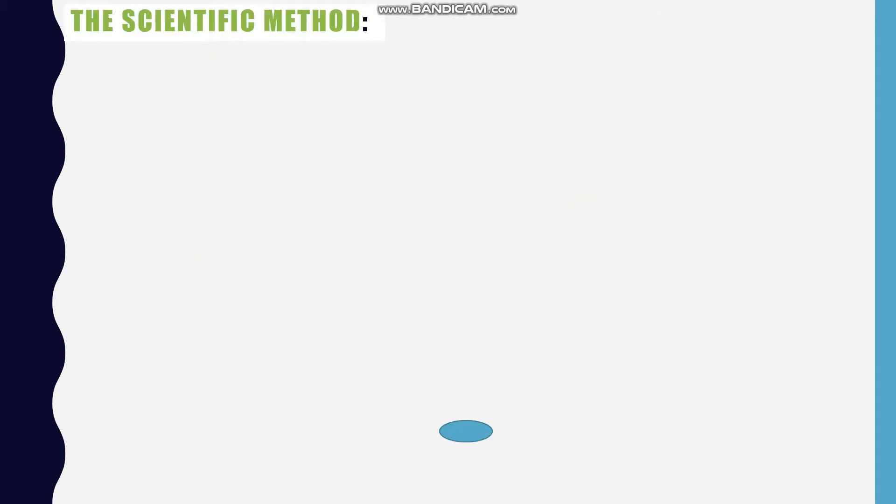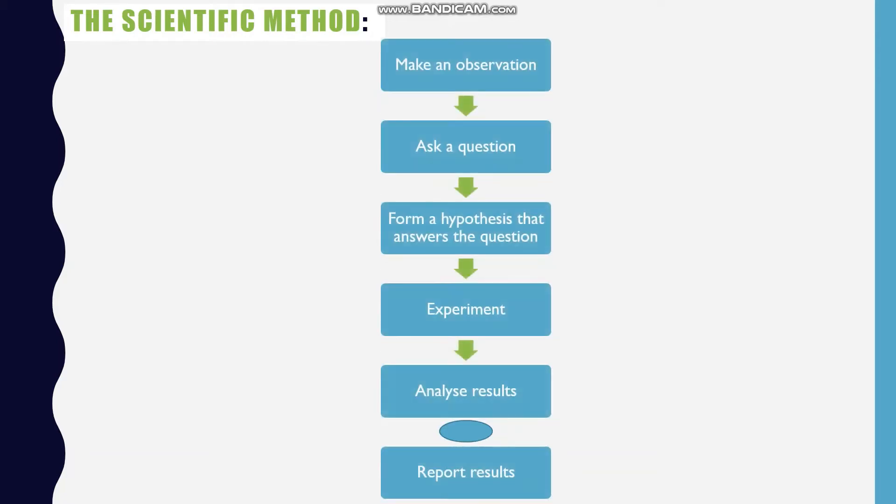Now we look at a graphic representation of the scientific method. In this graphic, it shows that an observation is made first. However, this does not have to be the case. For example, a question could be asked first. So in this example, we have make an observation, followed by ask a question. Then a hypothesis is formulated and this hypothesis tries to answer the question. An experiment is done. The results are analyzed. And the results are reported.